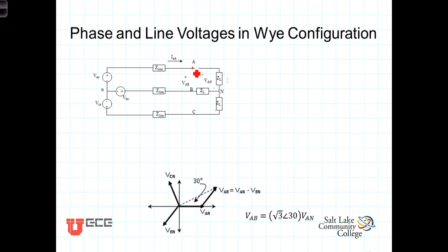where the line voltages are VAB, the voltage from the A line to the B line, VBC, the voltage from the B line to the C line, or VCA, the voltage from the C line to the A line.